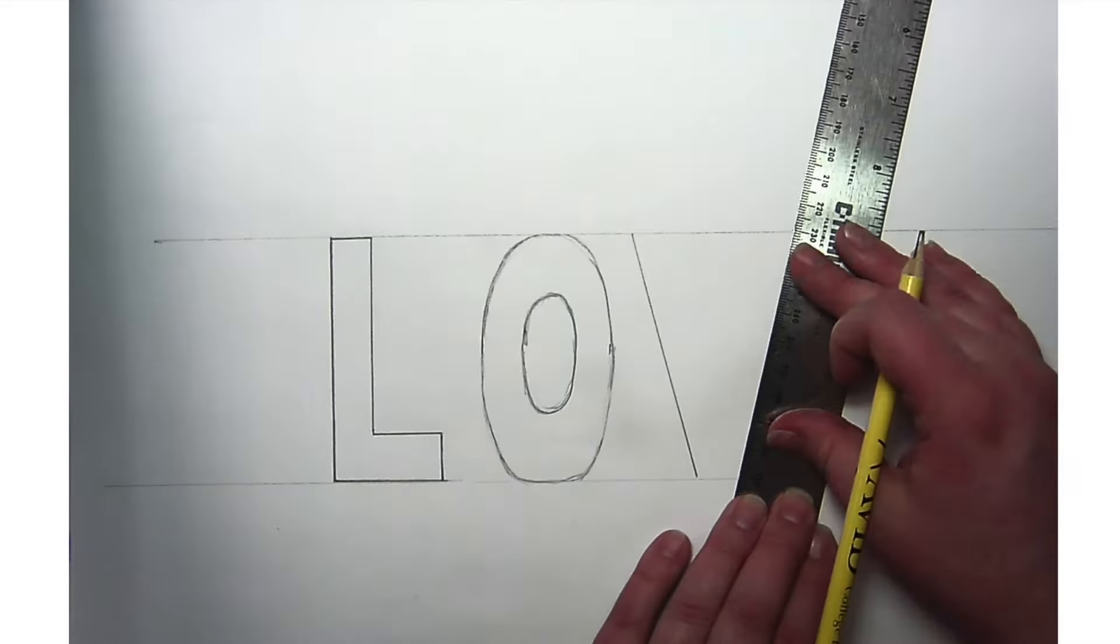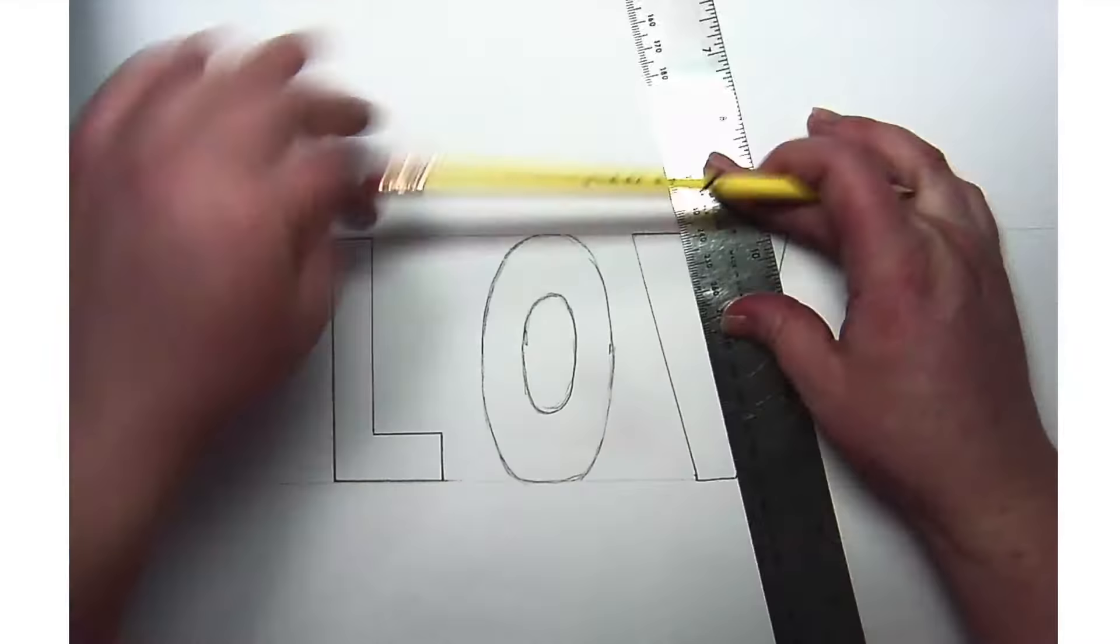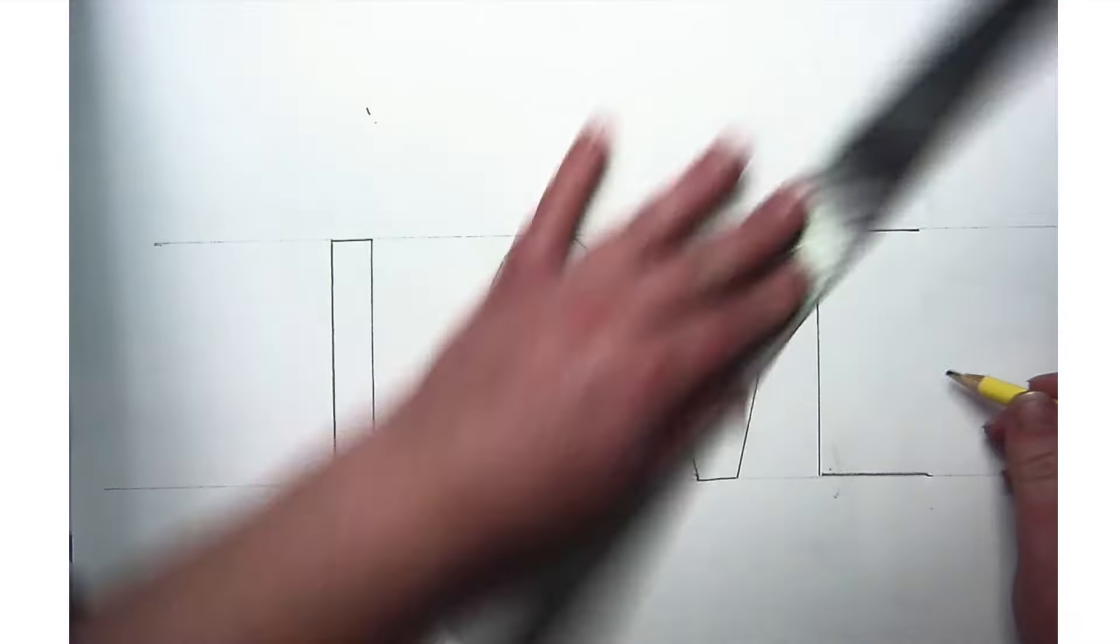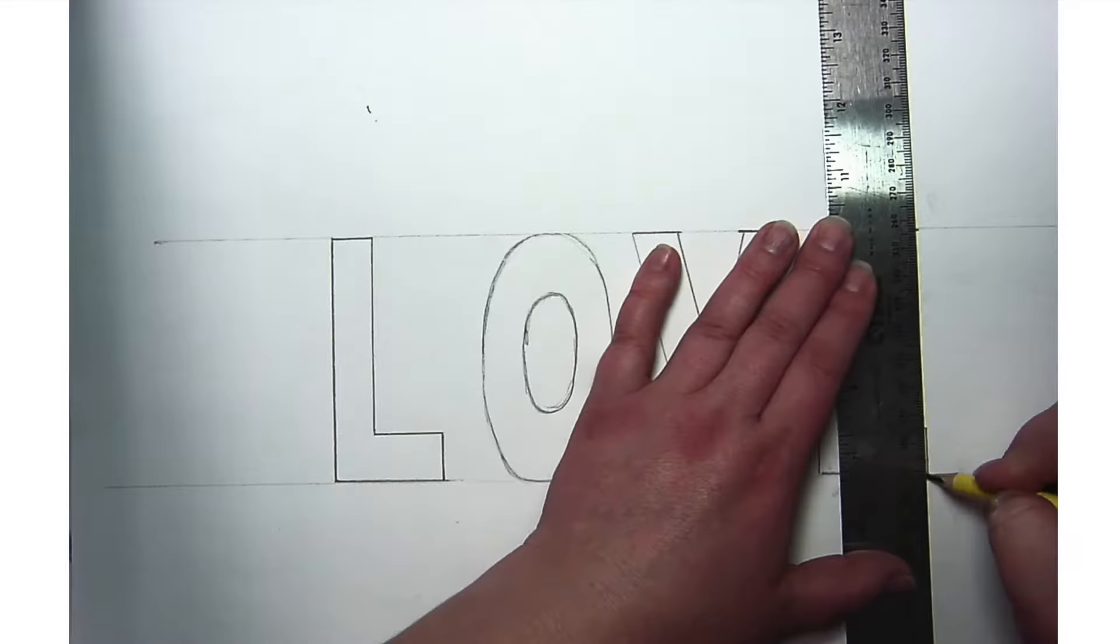All the letters should be roughly the same thickness. Here I'm just going to finish up by drawing in my V and E, using the ruler to get all those straight lines and make the letters nice and even.